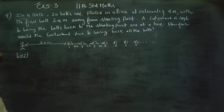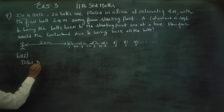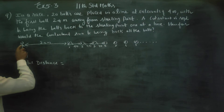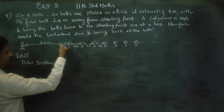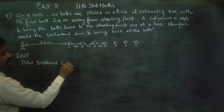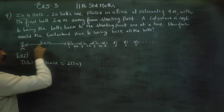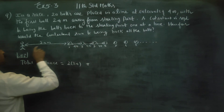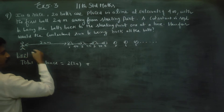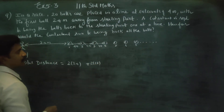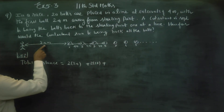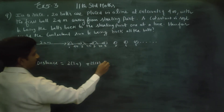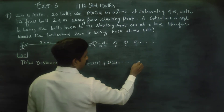How far would the contestant run to bring back all the balls? Total distance traveled by the contestant: the first ball is 24 meters. For the second ball, 24 plus 4 equals 28 — that is 2 times 28. Then 24, 28, 32 — for the third ball it is 32 meters, so 2 into 32. And it goes on for 20 balls.